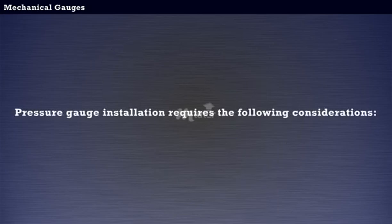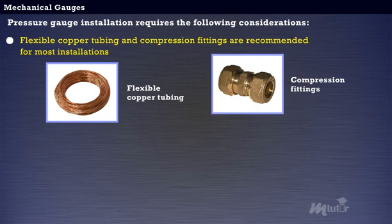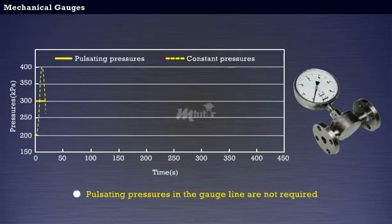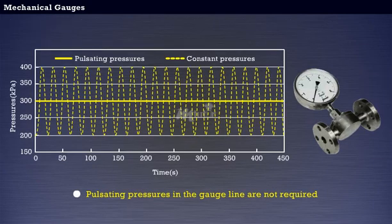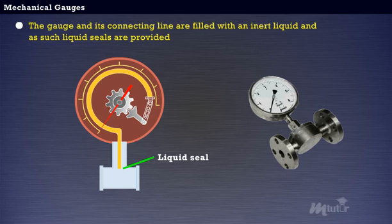While installing any pressure gauge, following considerations are required. Flexible copper tubing and compression fittings are recommended for most installations. The installation of gauge cork and T in the line close to the gauge is recommended as it permits the gauge to be removed for testing or replacement without having to shut down the system. Pulsating pressures in the gauge line are not required. The gauge and its connecting line are filled with an inert liquid, and as such liquid seals are provided.